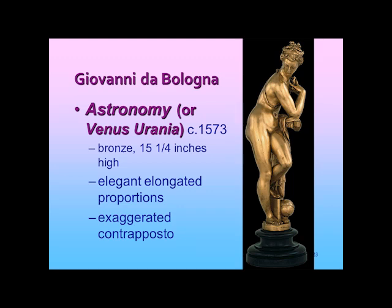One of the Mannerist ambiguity things about some of Giambologna's work is there are a few pieces where they seem to have an alternate title — or like he may not have decided the title or the subject until after he got it made. This piece is sometimes called Astronomy and sometimes called Venus Urania. If you look at the attributes at her feet, you'll see a celestial globe — a globe of the heavens — and hence Astronomy, someone studying the stars, as the personification of astronomy. But there is also a second possibility: who else might be associated with the celestial globe?